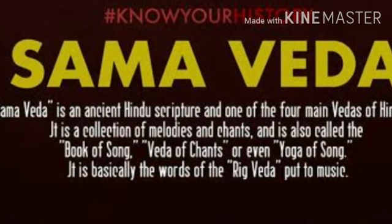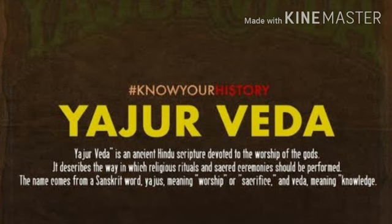Sama Veda has taken much from the Rig Veda. It mainly consists of Shlokas — mantras that are recited at the time of Yajna. Yajur Veda has two different types of text called Black, meaning Krishna, and White, meaning Shukla.